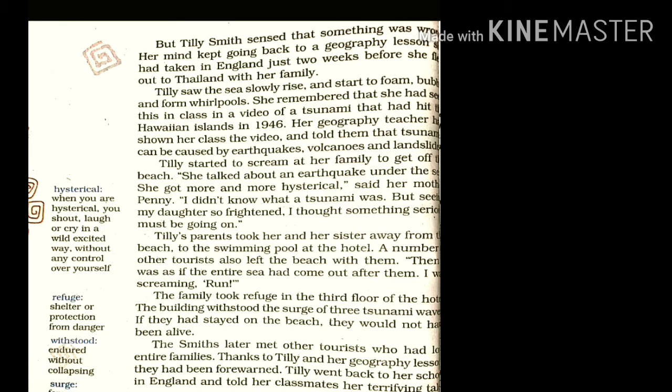Tilly's parents took her and her sister away from the beach to the swimming pool at the hotel. A number of other tourists also left the beach with them. Then it was as if the entire sea had come out after them. The family took refuge on the third floor of the hotel, the building which withstood all three tsunami waves. If they had stayed on the beach, they would not have been alive. The Smiths later met other tourists who had lost entire families. Thanks to Tilly and her geography lesson, they had been forewarned. Tilly went back to her school in England and told her classmates her terrifying tale. The knowledge we take every day should be applied in our daily life — then only it is useful for us.